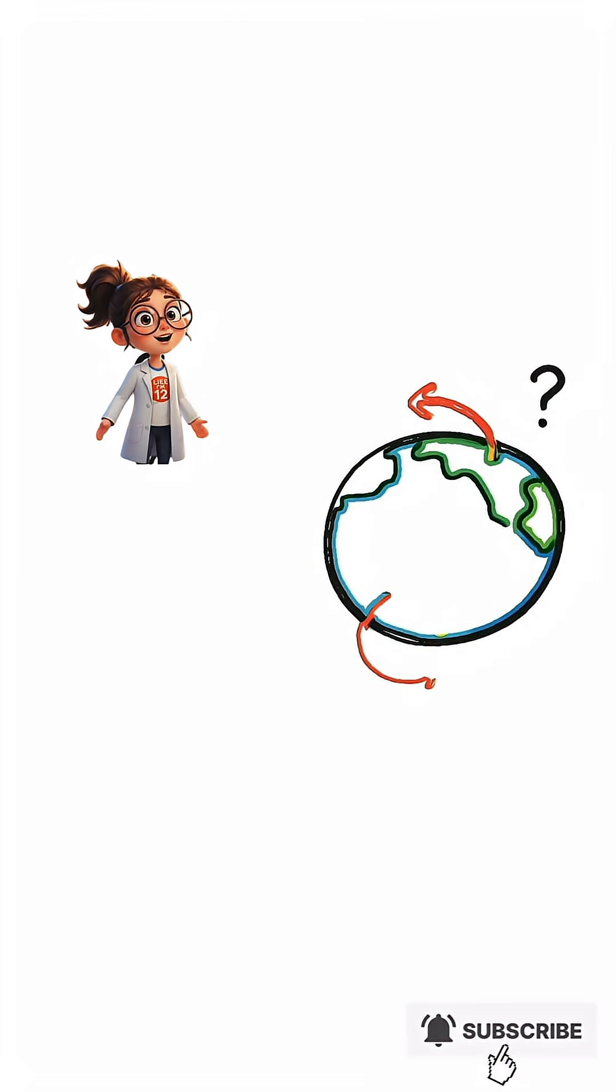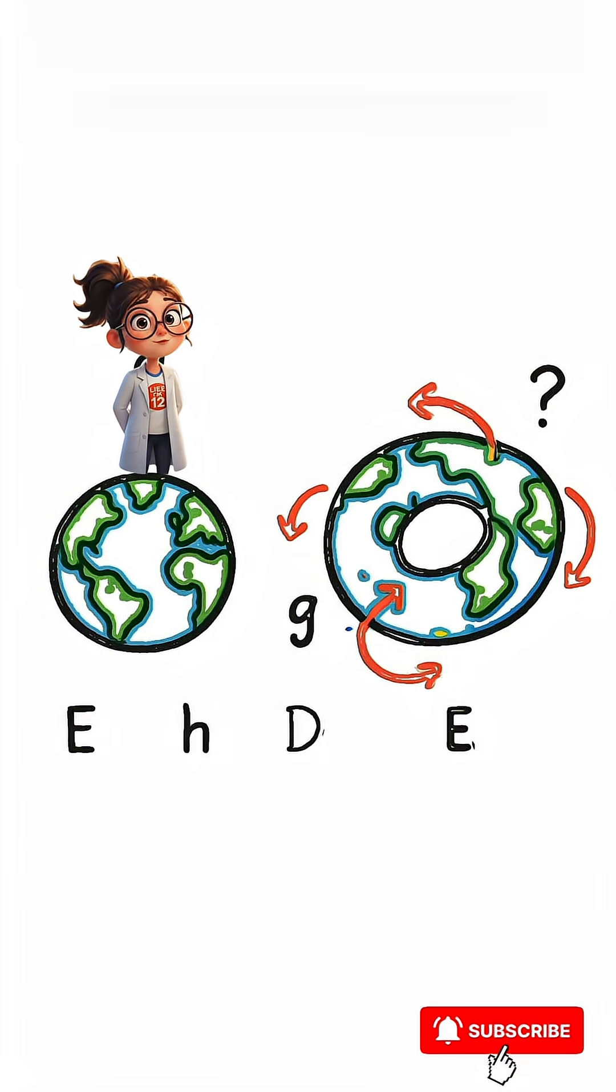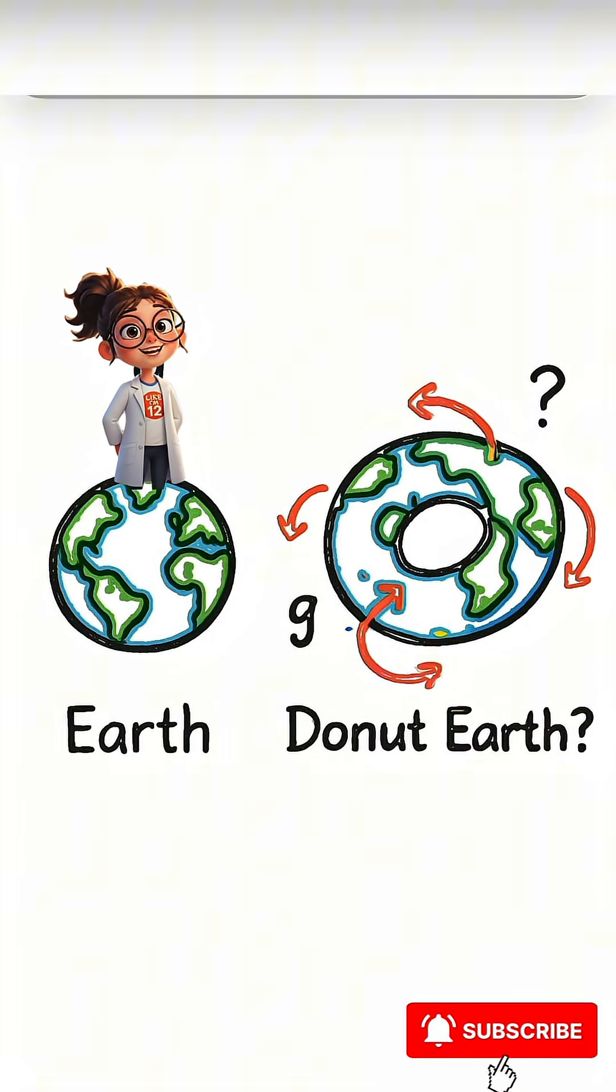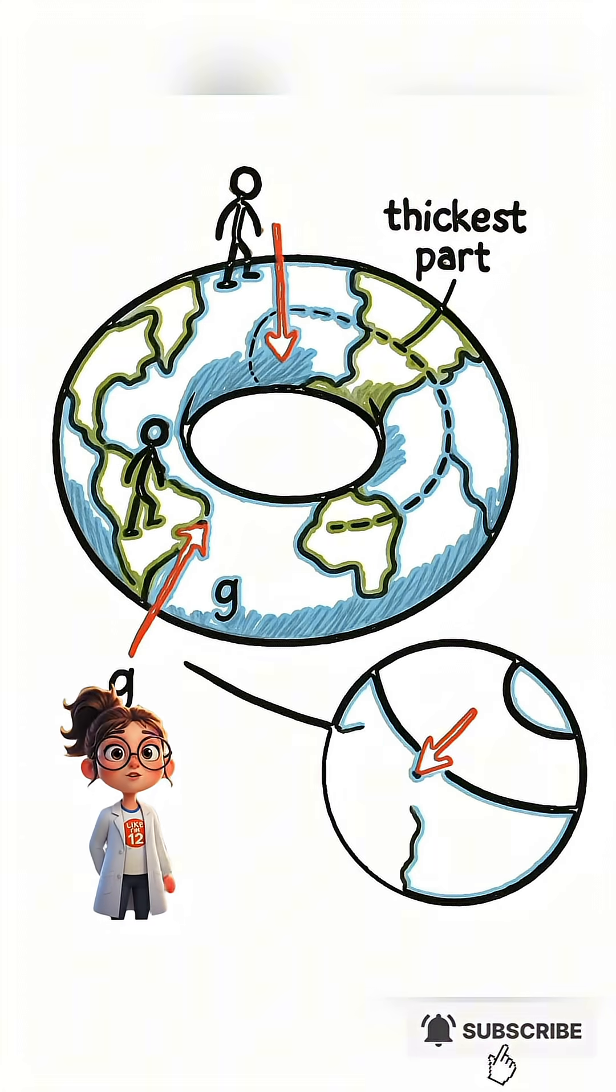What if Earth wasn't a ball, but a giant donut? First, gravity would get really weird. Instead of pulling straight down, it would pull you toward the thickest part of the donut.